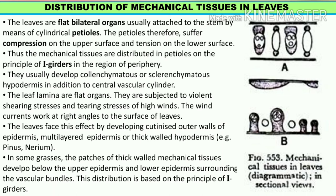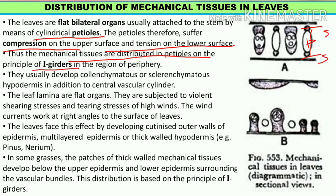The leaves are dorsiventral, symmetrical and flattened organs and they have a cylindrical petiole. The petiole suffers compression on the upper surface and tension on the lower surface. The mechanical tissue is distributed in the petiole on the eye girder concept - parenchymatous regions and sclerenchymatous or colenchymatous regions are present. The region of periphery usually develops colenchymatous and sclerenchymatous hypodermis in addition to the vascular cylinder.